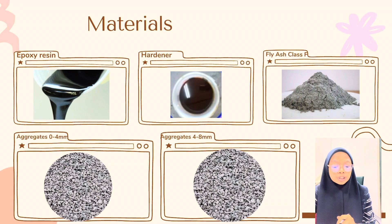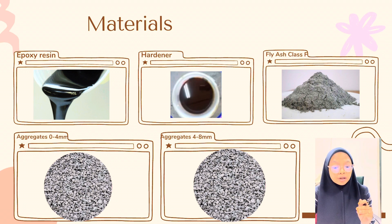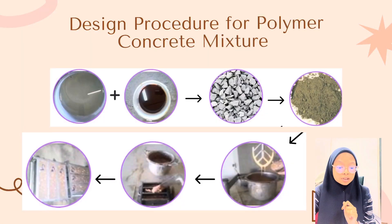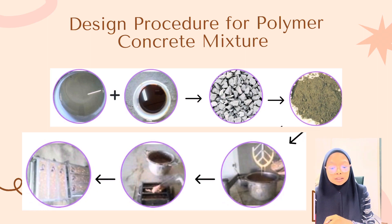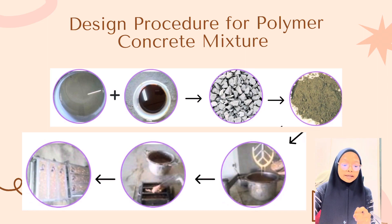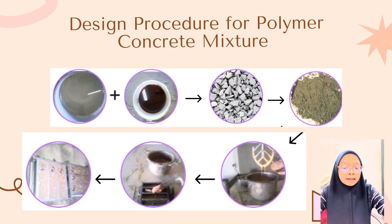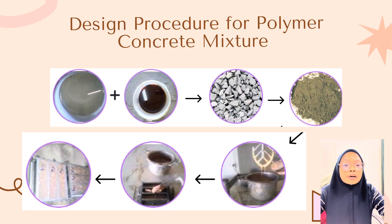The materials needed for this procedure are epoxy resin, hardener, fly ash Class F, and aggregates of size 0–4 mm and 4–8 mm. For the polymer concrete mixture, mix the required quantities of binder — epoxy resin and hardener. Then, mix the aggregate and the added filler, which is fly ash Class F, into the mechanical mixer. The mixture was poured into a mould and the curing process was started for 14 days.